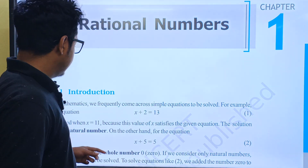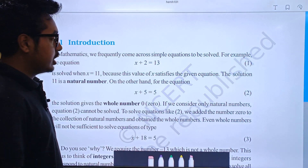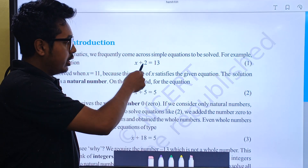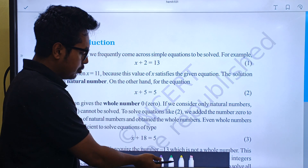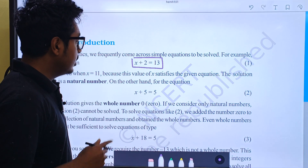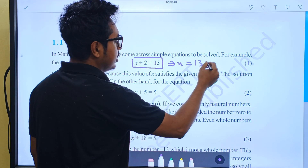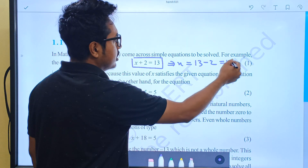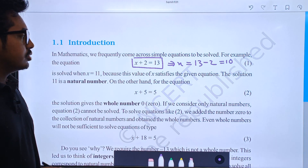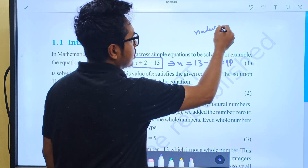So what is the introduction here? x plus 2 is equal to 13. There is an equation here, there is a variable x with constant add 2, and when we add these two we will get 13. So this is an equation. If we solve this equation, x is equal to 13 minus 2, which is 11. So for this equation, we need a natural number, which is 11.